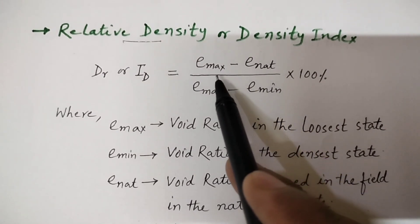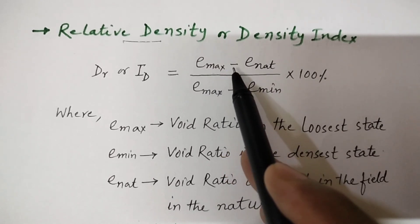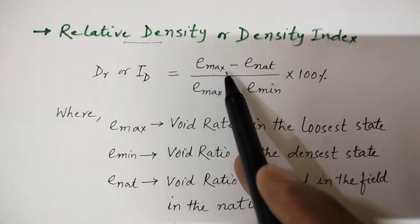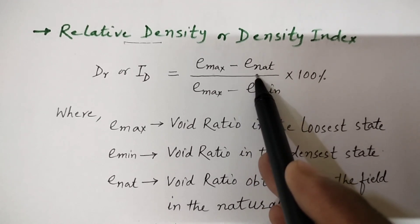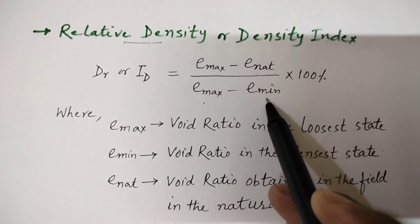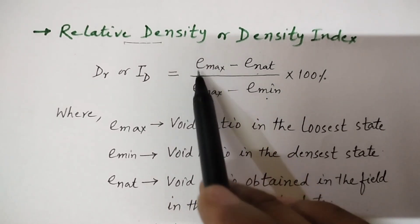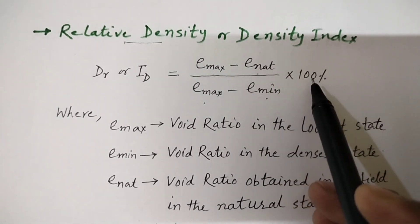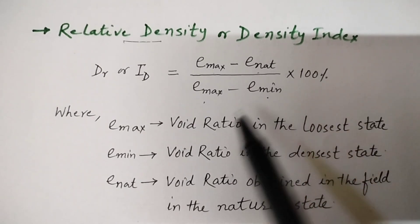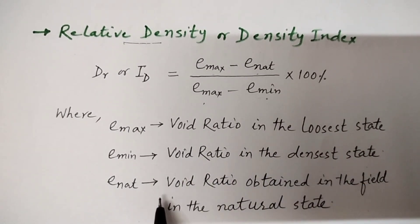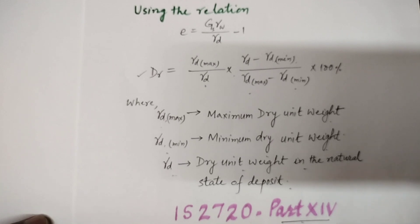The relative density is defined as the ratio of the difference between the void ratio of a cohesionless soil in the loosest state, that is, void ratio will be maximum, and the void ratio in its natural state to the difference between the void ratio in the loosest and densest state. In loosest state, the void ratio will be maximum, and in densest state, void ratio will be minimum. Since it is expressed in percentage, multiply by 100%. Here, E_max means void ratio in the loosest state, E_min is void ratio in the densest state, E_nat is void ratio obtained in the field in the natural state.